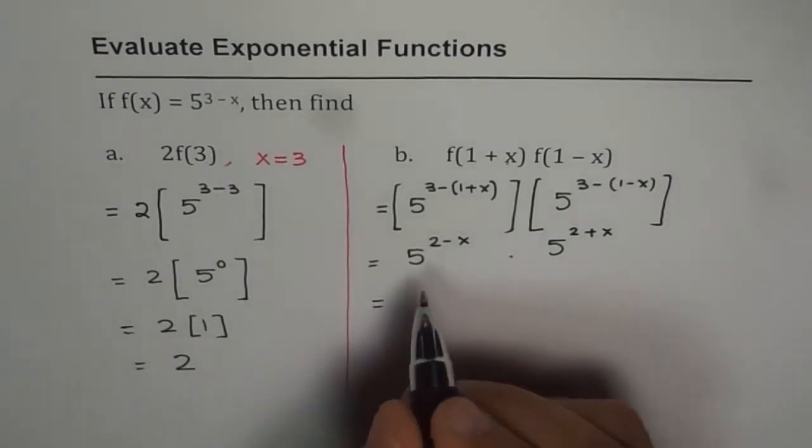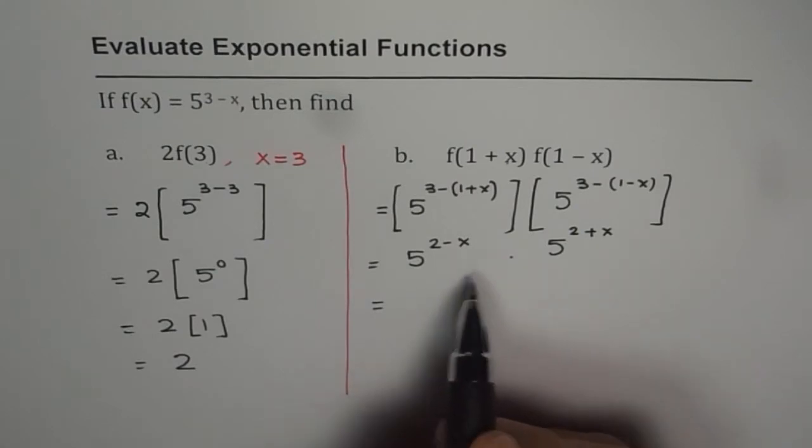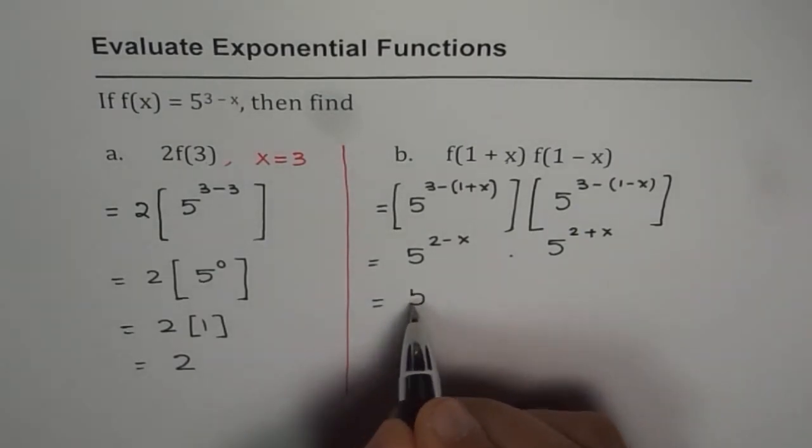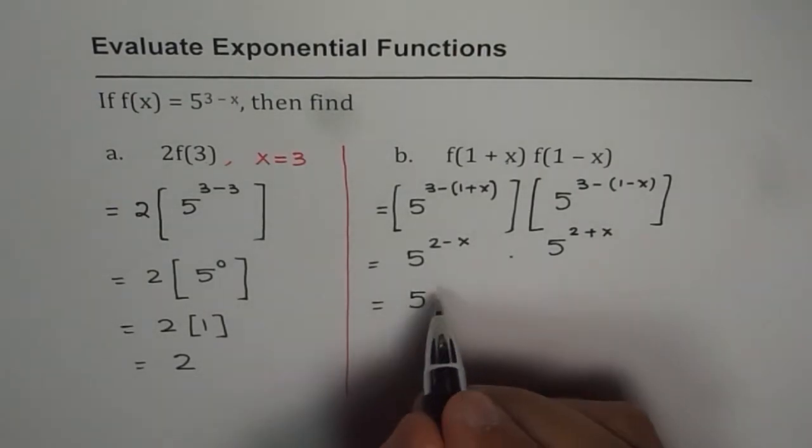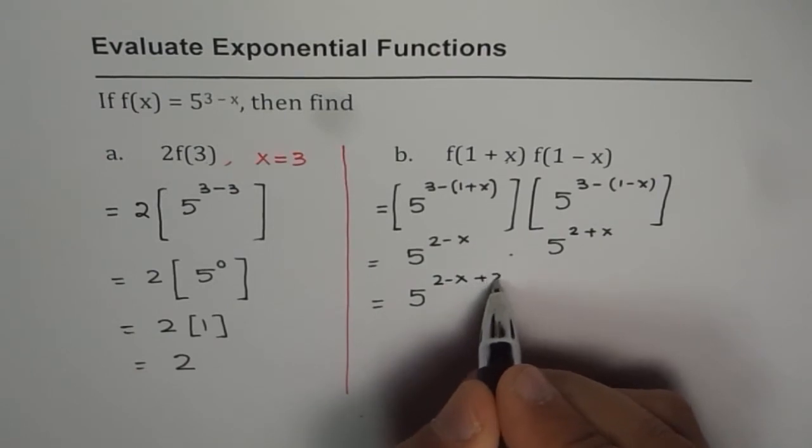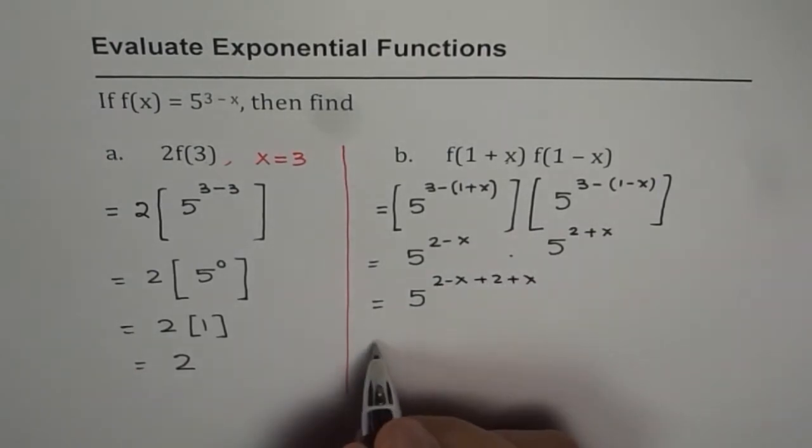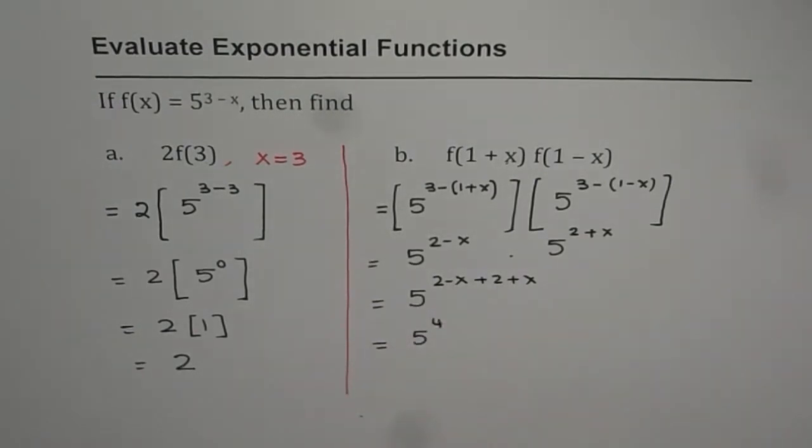Now we are trying to multiply two exponential functions with the same base. The base is 5, so applying the rules, their exponents will get added up. So let us add them up. So we get 2 minus x plus 2 plus x. And that gives us 5 to the power of 2 plus 2 is 4, and minus x plus x is 0. So we are left with 5 to the power of 4.